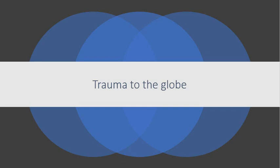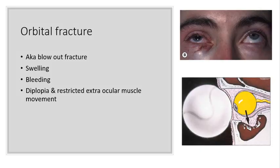The final topic in this presentation is trauma to the globe. An orbital fracture results usually from trauma to the globe and is also known as a blowout fracture. It's typically caused by a sudden increase in orbital pressure from something that hits the eye that's larger than the opening of the orbital aperture — so things like a fist or a tennis ball. The eyeball is displaced and transmits rather than absorbs the impact, and what you see is swelling and bleeding, and also diplopia because there may be restricted extraocular muscle movement.